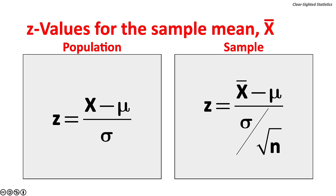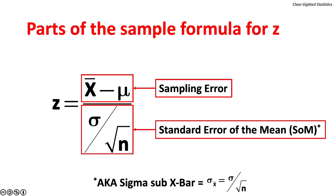found by the population standard deviation sigma over the square root of n, where n is the number of observations in the sample. To repeat, x bar minus mu is sampling error,